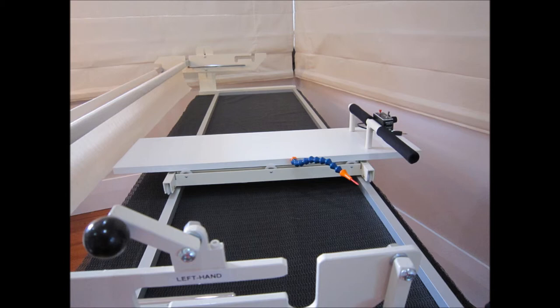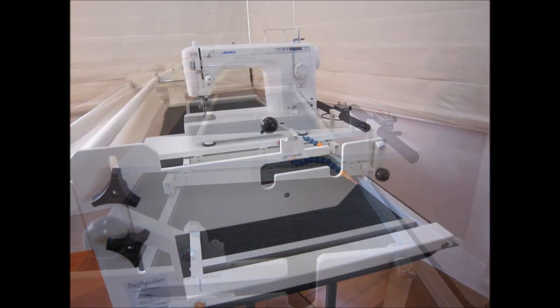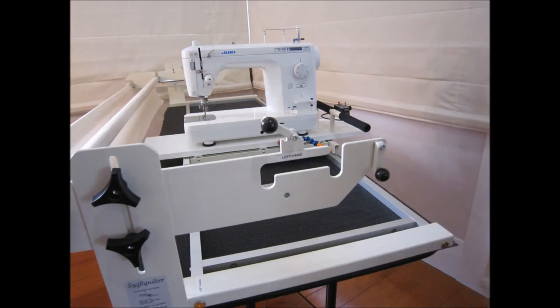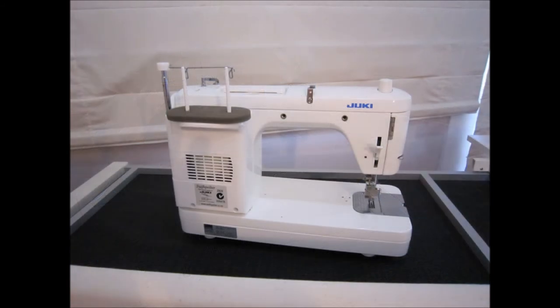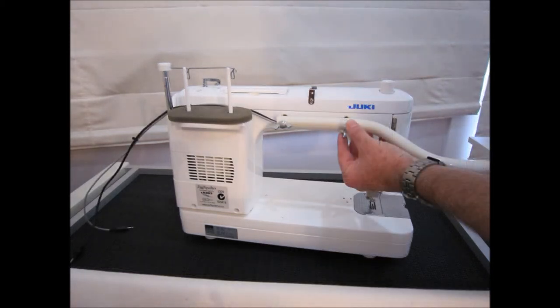The Juki TL-98 can now go on the machine base. You need to position it so you get full movement between the quilt bars. It's usually about three or four centimeters from the rear handles. And you'll notice that the Juki has two threaded inserts at the top on the right hand side or the back. This is where we're going to install the front handles. So line up the screws on the front handles with those threaded inserts and just do them up finger tight. That's all we need.